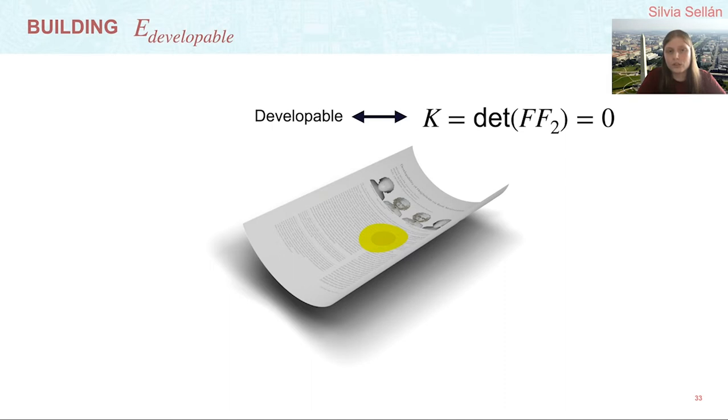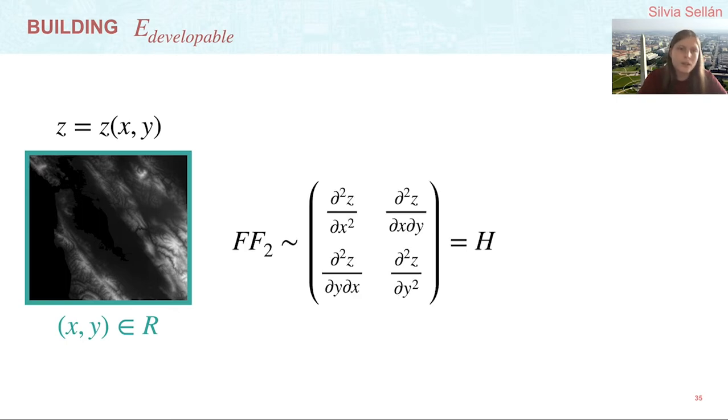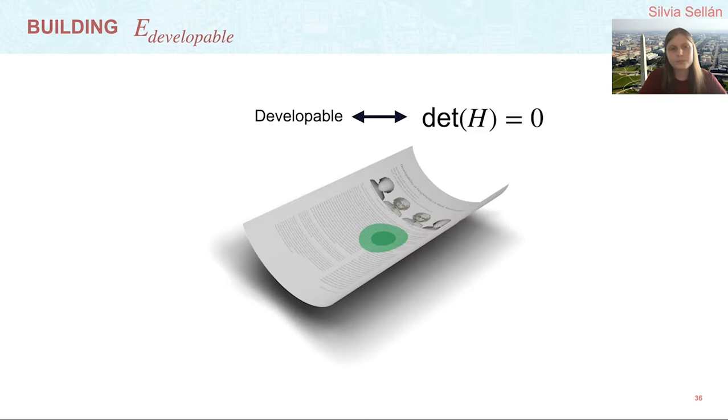Intuitively, the Gaussian curvature can be seen as a local geometric average of the curvature in every direction. One definition of the Gaussian curvature is that it's the determinant of a 2 by 2 matrix called the second fundamental form. Our first observation is that if we have a heightfield z defined over a region R of the plane, then the second fundamental form is proportional to the matrix of second derivatives of this z function, commonly called the Hessian matrix H.